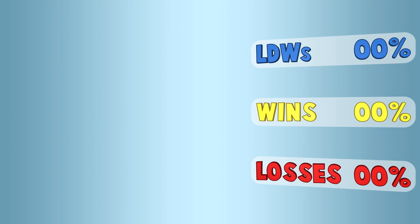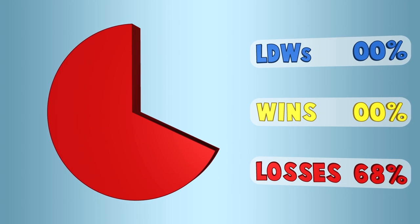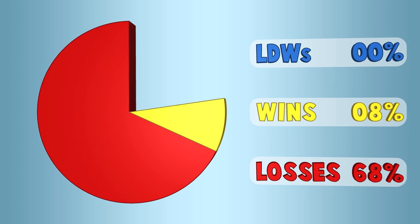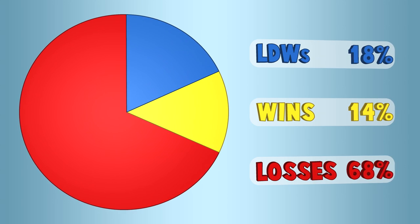When a player wagers on 15 lines, regular losses happen on about 68% of spins. Wins happen on about 14%, and losses disguised as wins happen on about 18%. Thus, LDWs are more common than regular wins.